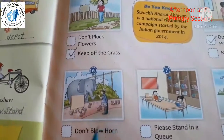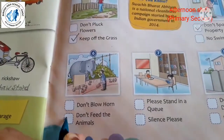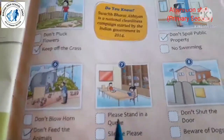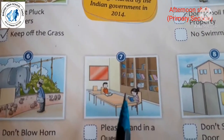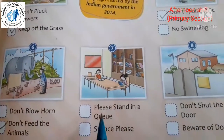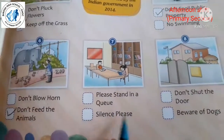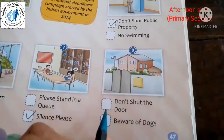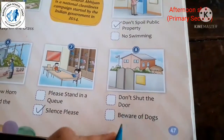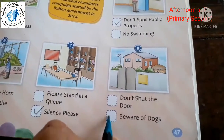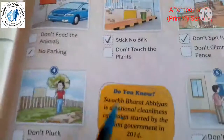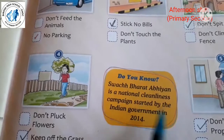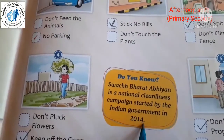The sixth picture shows a man in the zoo, so the correct notice is 'don't feed the animals'. The seventh place is a library, so the correct notice is 'silence please'. The eighth is a house — the correct notice is 'beware of dogs'.